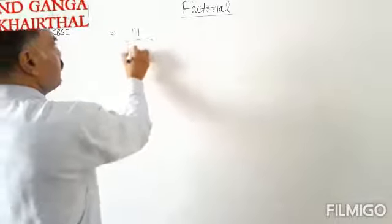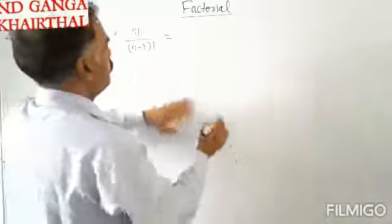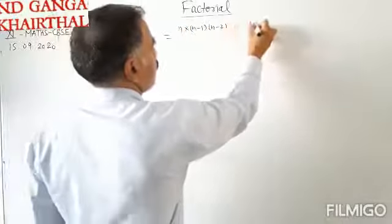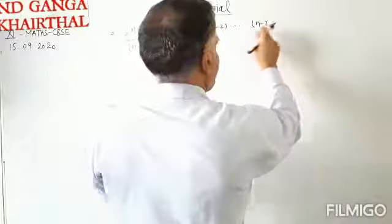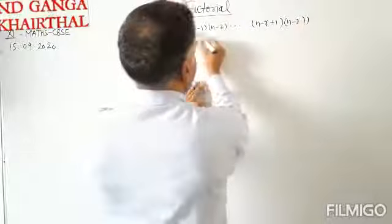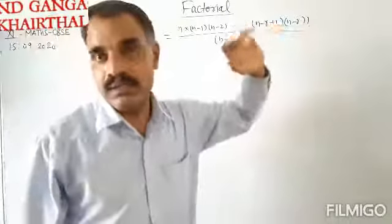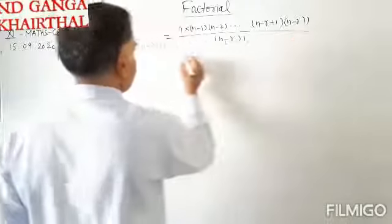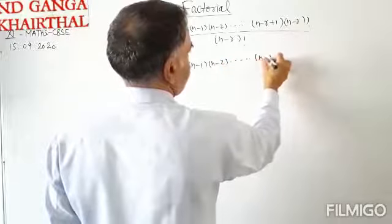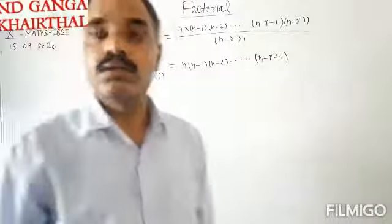The next property is n factorial upon n minus r factorial. Now n factorial can be expanded as n into n minus 1 into n minus 2 and so on, up to n minus r plus 1, into n minus r factorial, all divided by n minus r factorial. So n minus r factorial cancels, and we get n into n minus 1 into n minus 2 and so on, into n minus r plus 1.